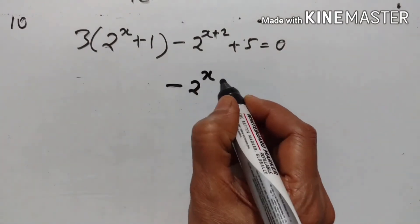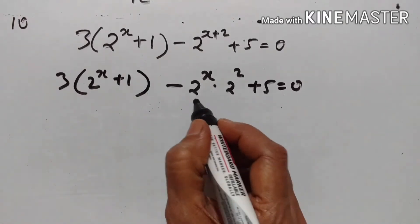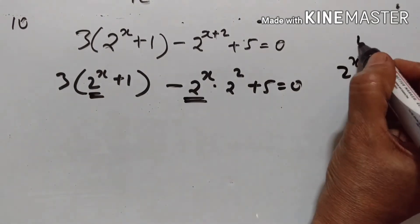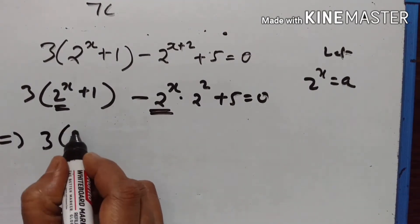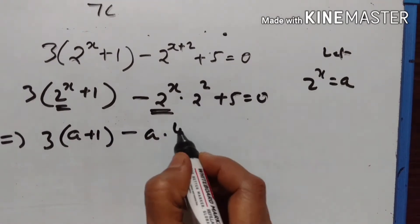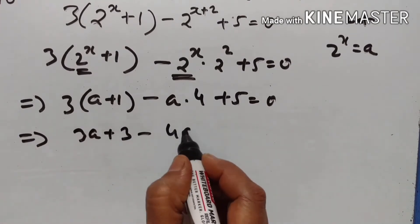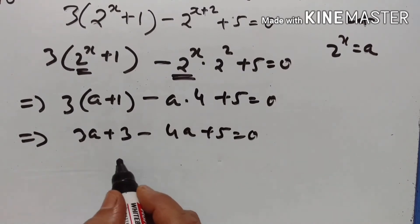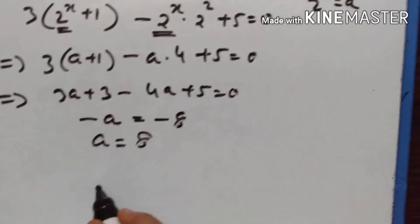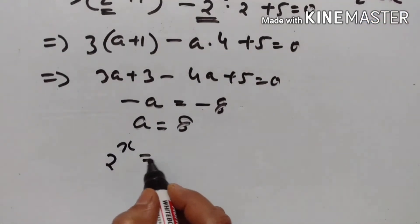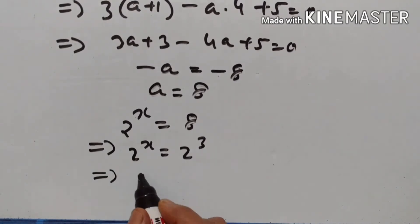For problem 10: 2 raised to the power of x into 2 raised to the power of x plus 5 equals 3 raised to the power of 2 raised to the power of x plus 1. Let 2 raised to the power of x equal a. This becomes 3 into a plus 1 minus a into 2 squared equals 0, giving 3a plus 3 minus 4a plus 5 equals 0. Therefore minus a plus 8 equals 0, so a equals 8. Since a equals 2 raised to the power of x, and 8 equals 2 cubed, the bases are the same so x equals 3.